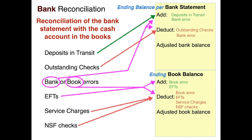Once you finish your bank reconciliation, you'll come up with an adjusted bank balance from the bank side and an adjusted book balance from the book side. These two should equal — they should be the same. That's ultimately what we're looking for: once we make all our adjustments on both sides to the bank statement and to the book side, we should have the same number. The adjusted balances should be the same.